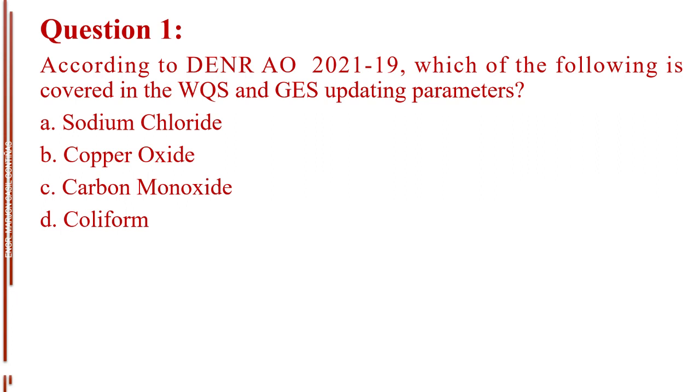Question number 1. According to Department of Environment and Natural Resources Administrative Order 2021-19, which of the following is covered in the WQS and GES updating parameters? Letter A, Sodium Chloride. Letter B, Copper Oxide. Letter C, Carbon Monoxide. Letter D, Coliform. The answer is Letter D, Coliform.